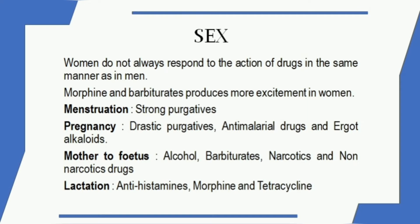At menstruation time, strong purgatives should be avoided. During pregnancy, drastic purgatives, anti-malarial drugs, and ergot must be avoided as they affect the mother and fetus. Alcohol, barbiturates, narcotics, and non-narcotic drugs such as antihistamines, morphine, and tetracycline also affect the fetus. There is a clear variation in drug response between males and females.